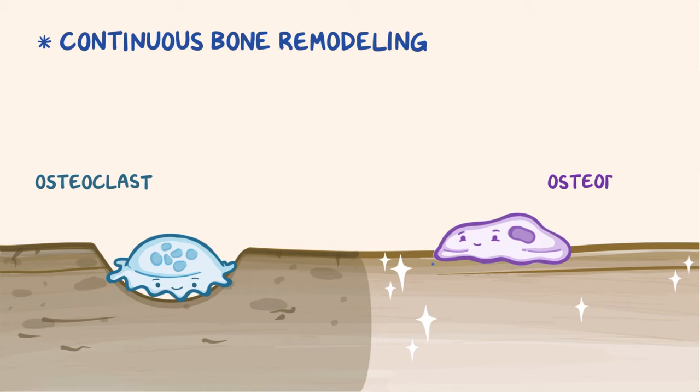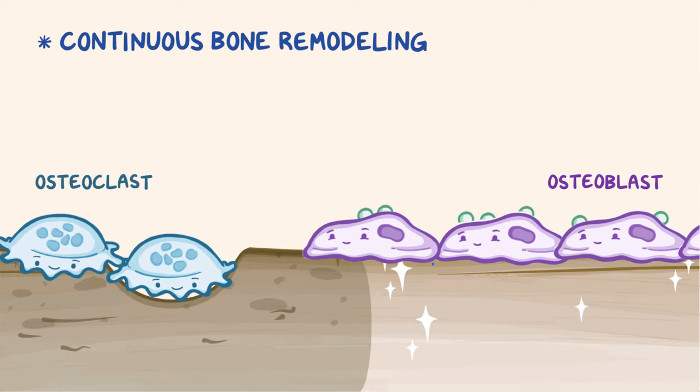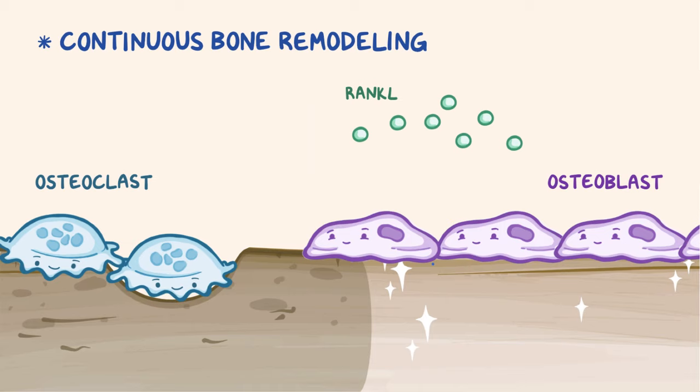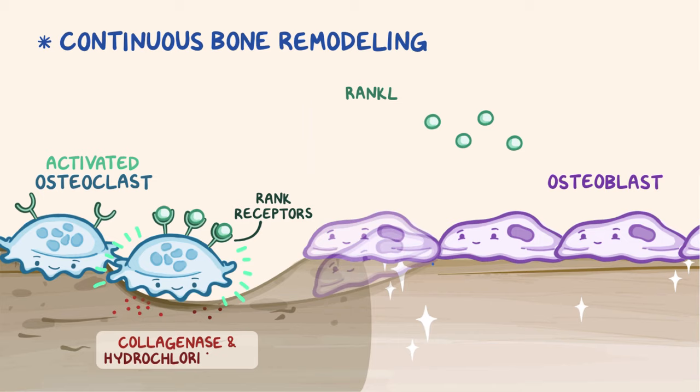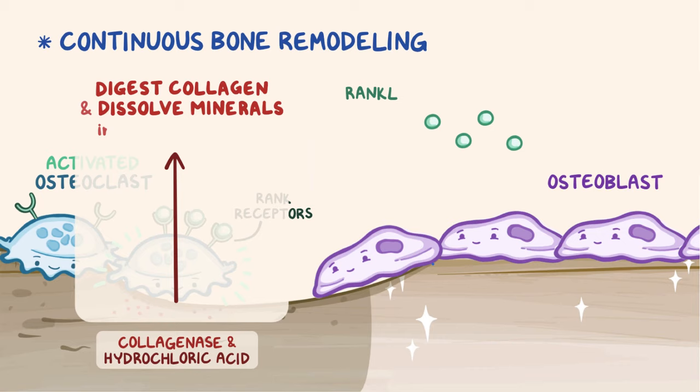At the cellular level, the process begins when osteoblasts release receptor activator of nuclear factor kappa-beta ligand, or RANKL for short, which is a substance that binds to RANK receptors on the surface of an osteoclast. When RANKL binds to the RANK receptor, it activates the osteoclasts, and they start secreting lysosomal enzymes like collagenase as well as hydrochloric acid. Together, they digest the collagen protein and dissolve the minerals that make up the bone matrix.